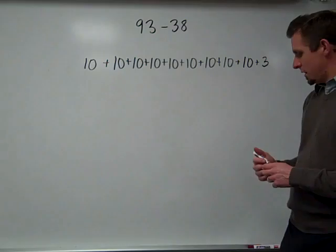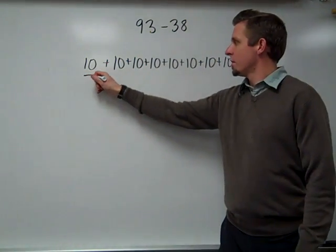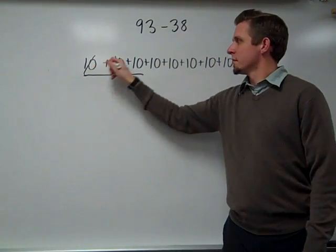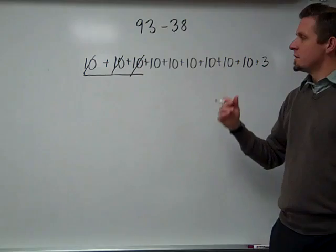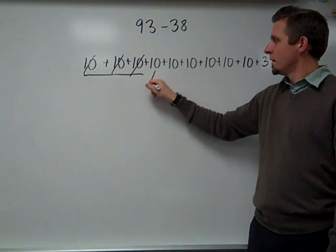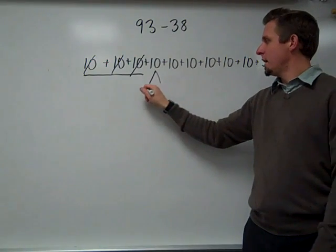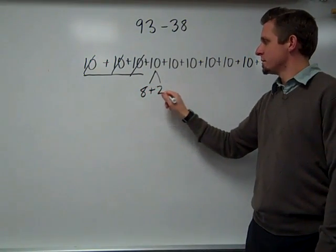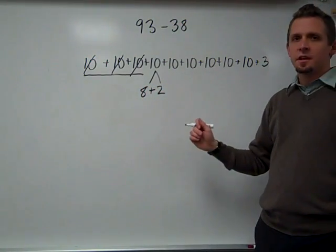And then she took away 30. So 10, 20, 30. And then she still had to take away 8 more. So she decomposed the next 10 into an 8, 8 plus 2. So now she can take away her 8.